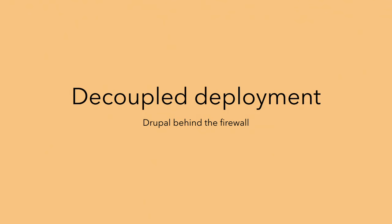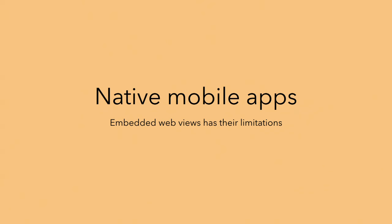With this, as we're going to explain later, we found a way where you could put Drupal behind the firewall and have your content rendered by these decoupled apps. Another angle we wanted to try out was building native mobile apps. The whole thing where you embed your website in a web view on your mobile phone works okay, but it has limitations, especially when it comes to performance and offline usage. So we experimented a little bit with that as well.